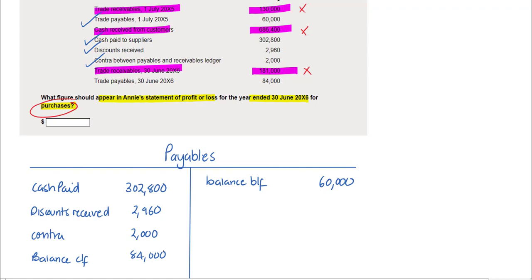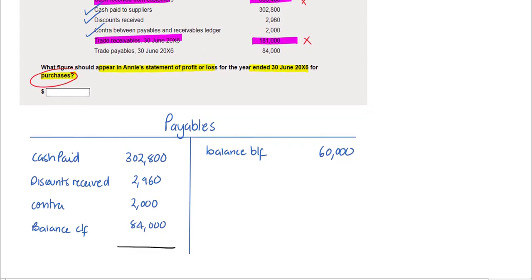With all the numbers populated into this t-account, it is now a case of balancing this ledger and working out the missing number for our purchases. If we total this t-account we can see that the debits are higher, equating to 391,760.